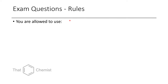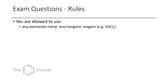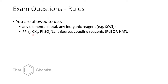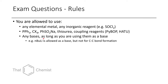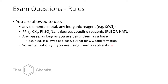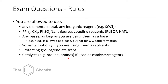Now let's go through the exam question rules. You're allowed to use any elemental metal — lithium, magnesium, copper — and any other inorganic reagents such as thionyl chloride or copper(I) iodide. You can use triphenylphosphine, tetrahalomethane such as carbon tetraiodide or carbon tetrabromide, sodium sulfonate salts, thiourea, and coupling reagents like PyBOP or HATU. You can use bases as long as you're only using them as a base — for example, n-BuLi as a base, but not for C-C bond-forming reactions. You can use solvents if relevant, protecting groups, enolate traps, and catalysts such as proline or secondary amines.